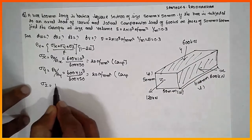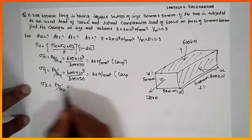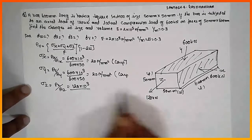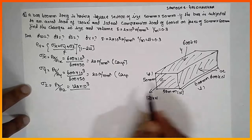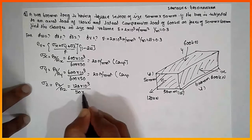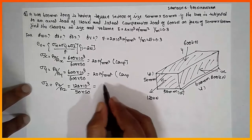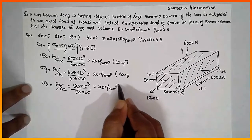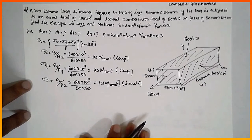σz = Pz / Az. Pz = 120×10³ N. The area is 50×50 mm. So σz = 120×10³ / (50×50) = 48 N/mm². This is the area, 50×50.